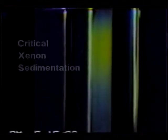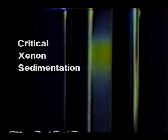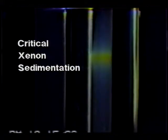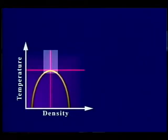The Zeno experiment is being done in the microgravity environment of space, because on Earth, as you near the critical temperature, the Earth's gravity causes the fluid to stratify or form layers, which distorts the sample. But the microgravity environment of space permits a very close approach to the critical temperature before stratification begins. Careful control of the sample density and thermal environment enables precise measurements to be made within a few millionths of a degree of the critical temperature — 100 to 1,000 times closer than is possible on Earth.